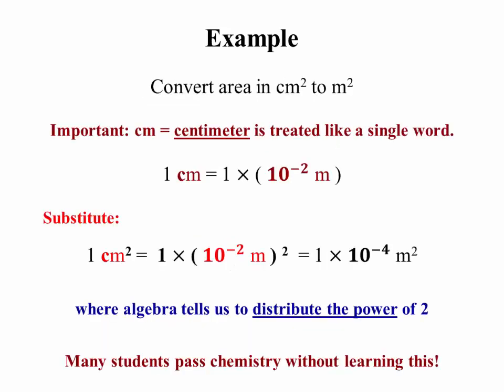Now a real example. Converting area in square centimeters to square meters. The important thing here that's often not learned even after a whole semester of chemistry is that a centimeter is a single word. It's not a product, it's a single word. So you say centimeter squared, that means you're squaring the entire word.